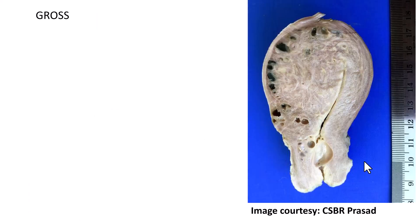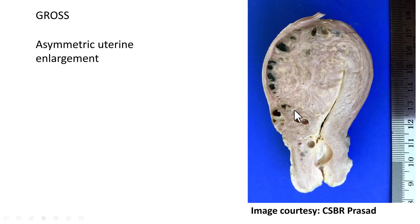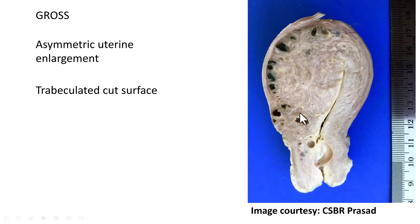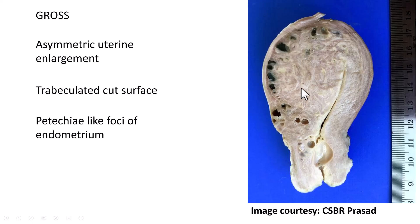On gross examination, you can see asymmetrical enlargement of the body of the uterus with a compressed endometrial cavity. The classical cut surface of an adenomyotic uterus shows trabeculations, with tiny petechiae-like foci of endometrial tissue visible throughout. You can also see larger blood-filled cystic areas.